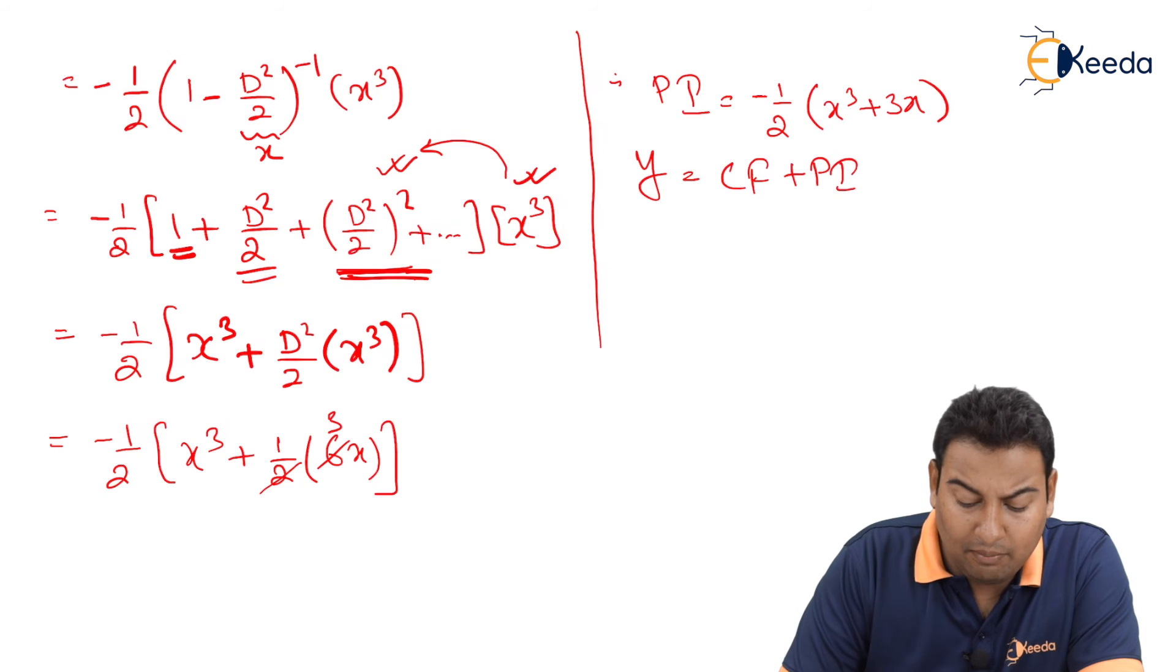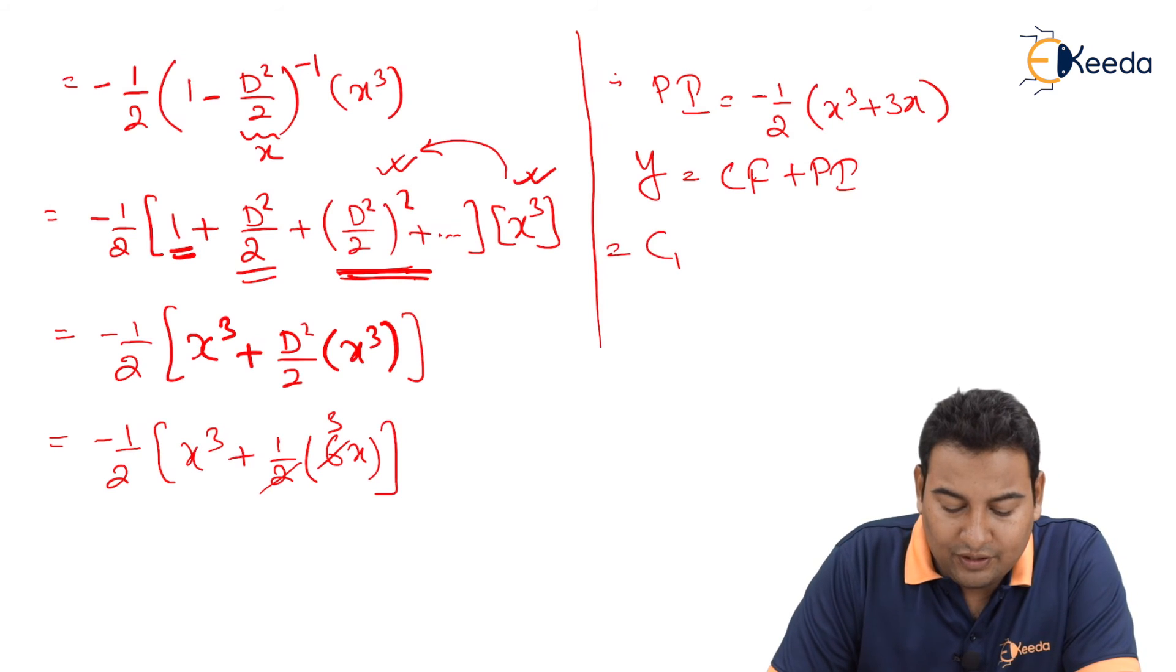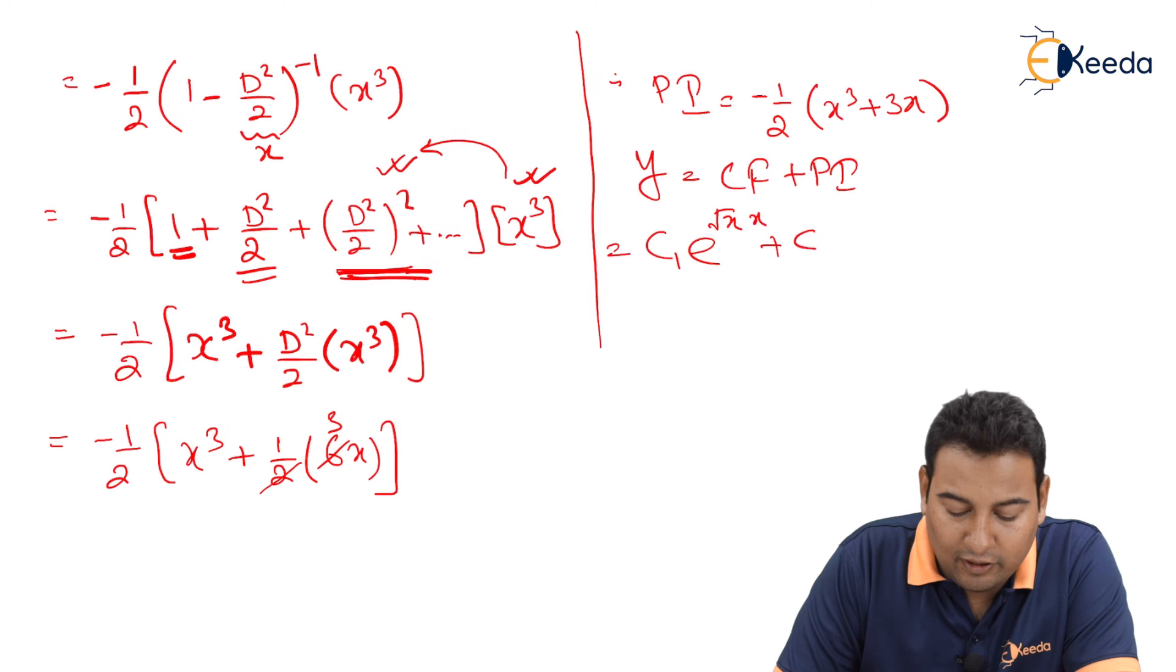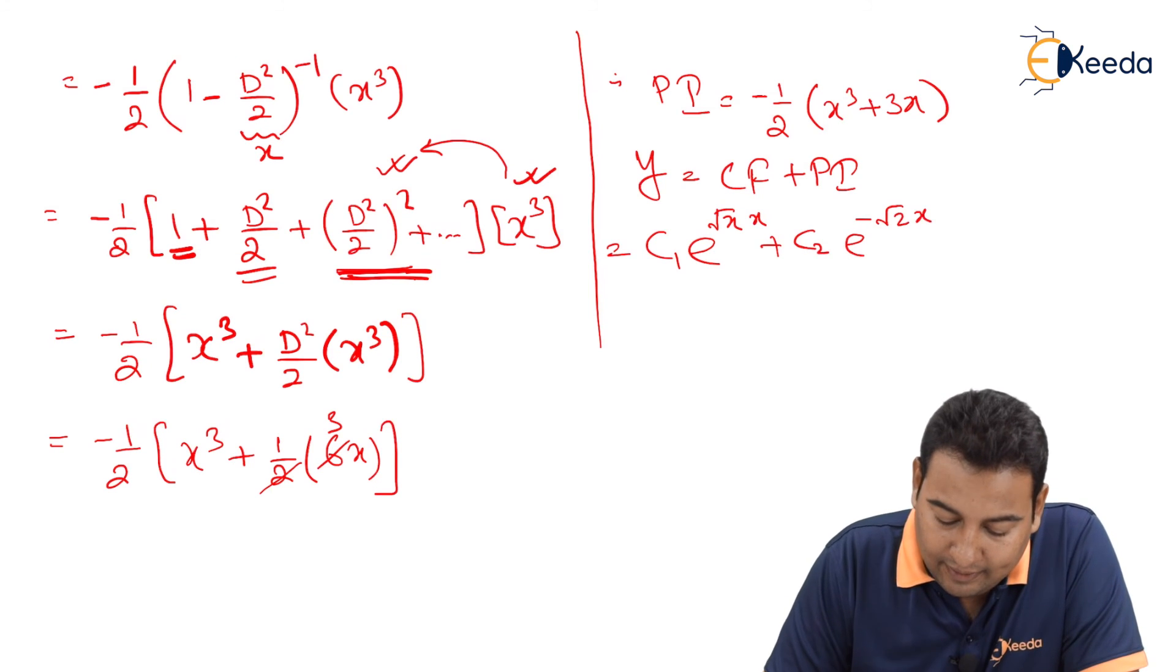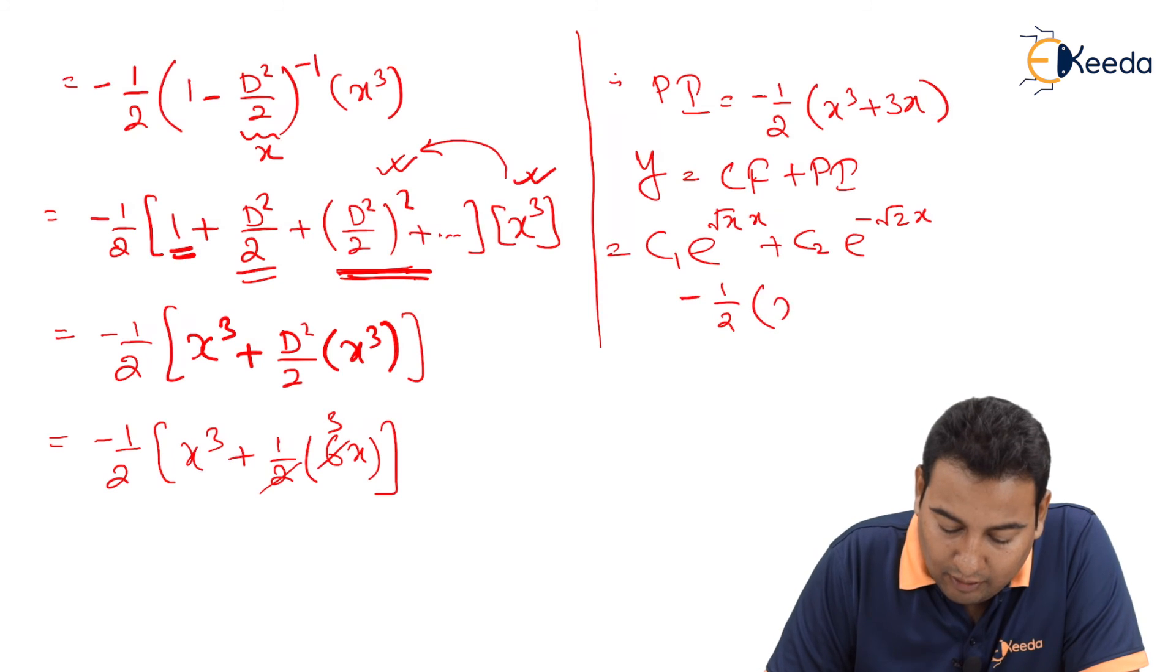CF plus PI. Remember the CF that we got? c1 e^(√2x) plus c2 e^(-√2x) plus PI, that is minus half x³ plus 3x.